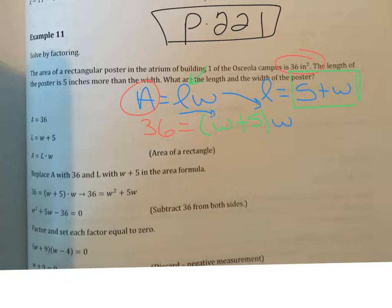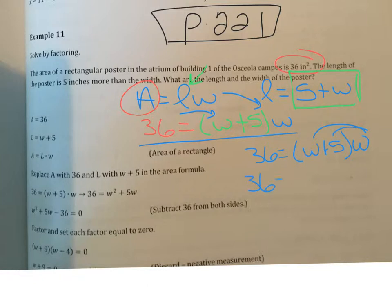So length turned into w plus 5, and now this is an equation we can solve for w. Rewriting: 36 equals w plus 5 times w. The first thing is to distribute this w, so 36 equals w squared plus 5w.